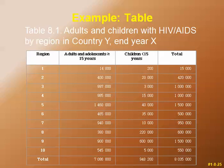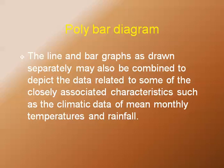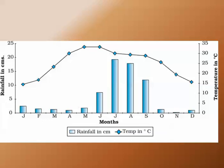Poly bar diagrams: line and bar graphs drawn separately may also be combined to depict data related to closely associated characteristics, such as climatic data of mean monthly temperatures and rainfall. An example shows two y-axes — rainfall in centimeters from 0 to 25 cm, and temperature in degrees centigrade from 0 to 35°C — while the x-axis represents months from January to December.